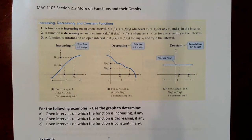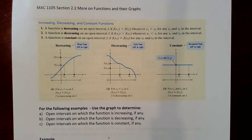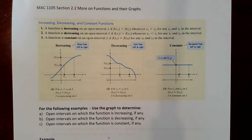This video covers section 2.2 from MAC-1105, discussing various characteristics of graphs — particularly the increasing, decreasing, and constant nature of a graph. We'll also look at how to identify relative max and relative min points, use algebraic tests to determine symmetry, examine even and odd functions, graph and evaluate piecewise functions, and take a look at the difference quotient.